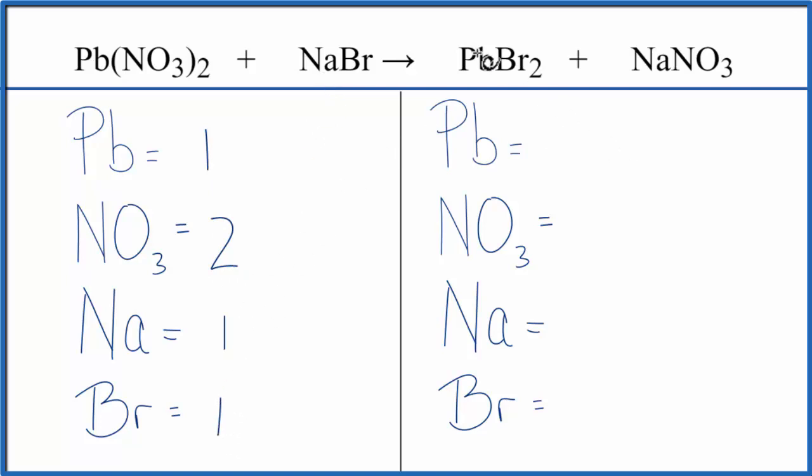On the product side, we have Pb 1, 1 NO3, 1 nitrate, Na 1, Br 2.